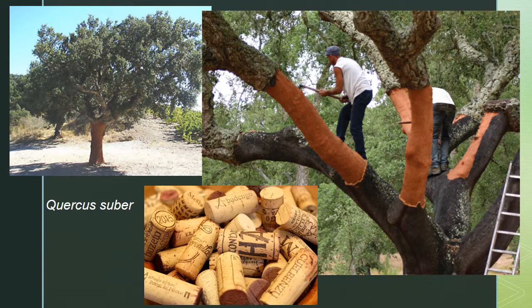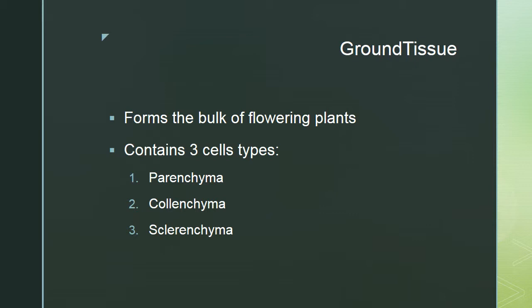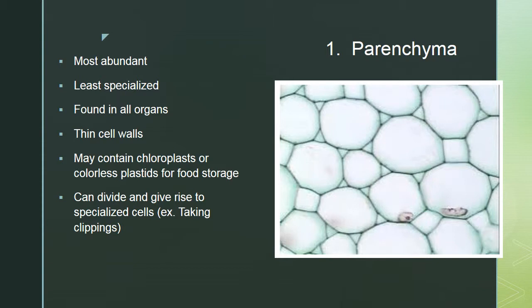Now let's move on to ground tissue, which forms the bulk of flowering plants. There are three cell types: parenchyma, collenchyma, and sclerenchyma. Parenchyma is the most abundant — large, thin-walled cells, many containing chloroplasts or colorless plastids used for food storage. Within a potato tuber, parenchyma cells store starch.